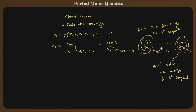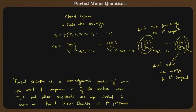So that is how these are called partial molar quantities. In general, the definition is: the partial derivative of a thermodynamic function Y with respect to the amount of component i of the mixture, when temperature, pressure and other constituents are kept constant, is called the partial molar quantity of that ith component. Mathematically, Ȳ = (∂Y/∂Ni) at constant T, P, and other constituents.